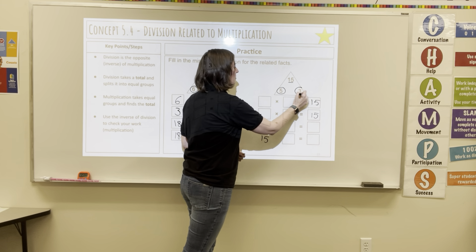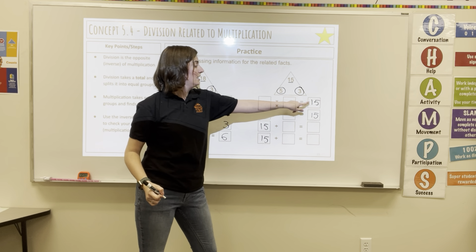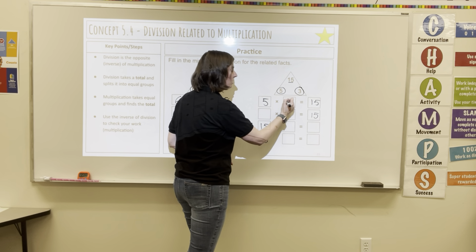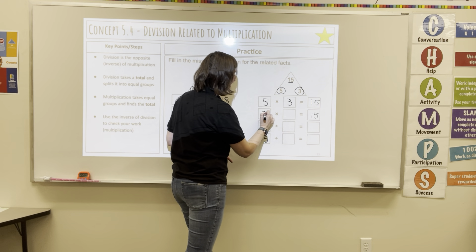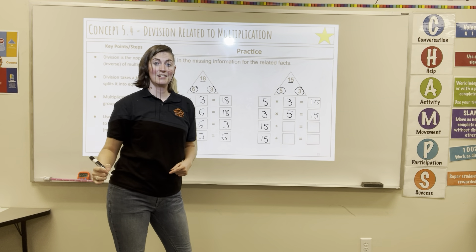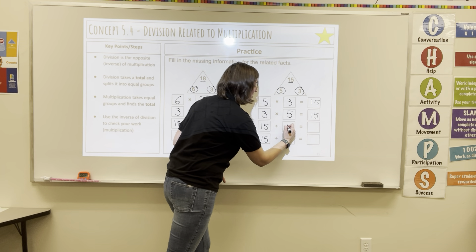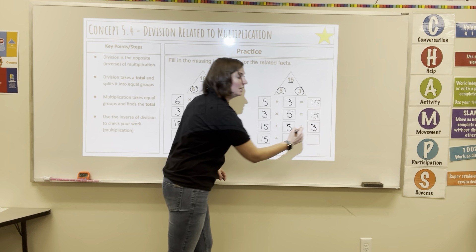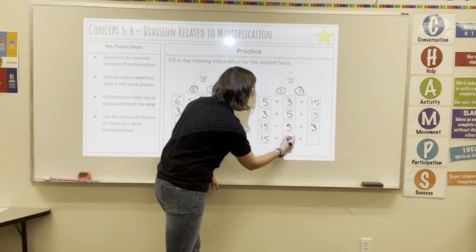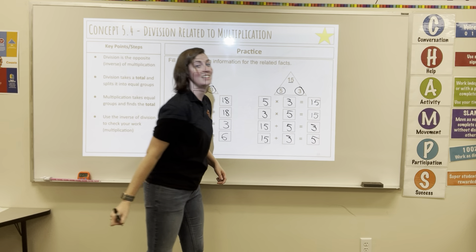Now I'm going to take my two smaller numbers. 5 times 3 can get me 15, or 3 times 5 can get me 15. I can split 15 into 5 groups with 3 in each, or I can split 15 into 3 groups that have 5 in each group.